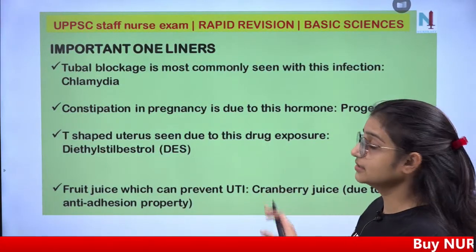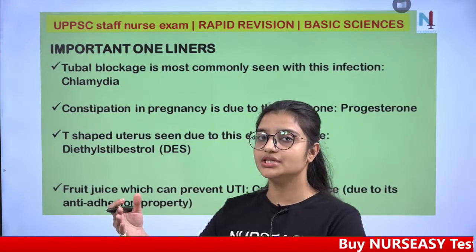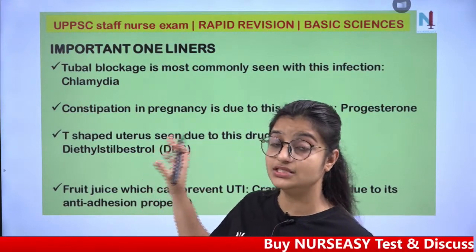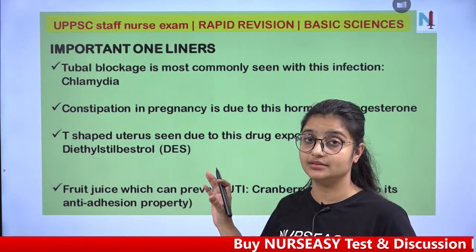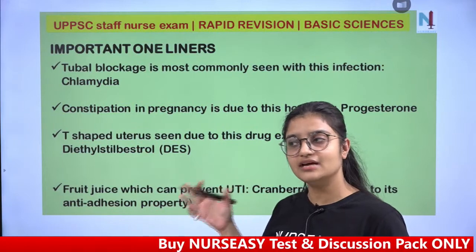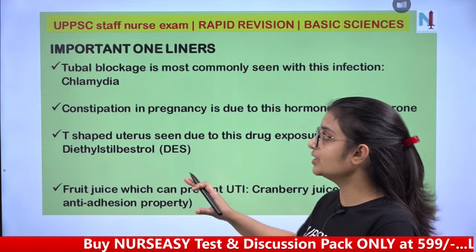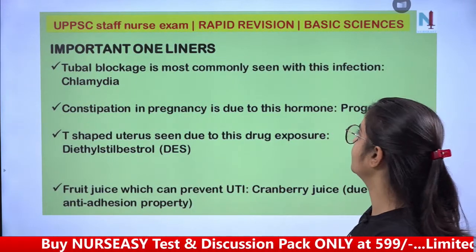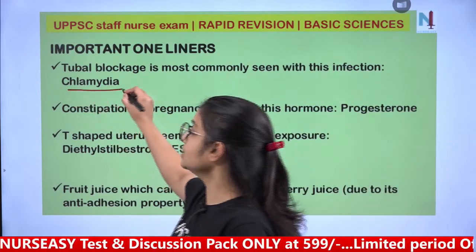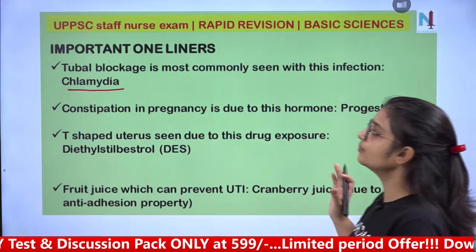There are some important one-liners on which direct questions are asked. Tubal blockage is most commonly caused by Chlamydia trachomatis infection. Constipation in pregnancy is due to the hormone progesterone.